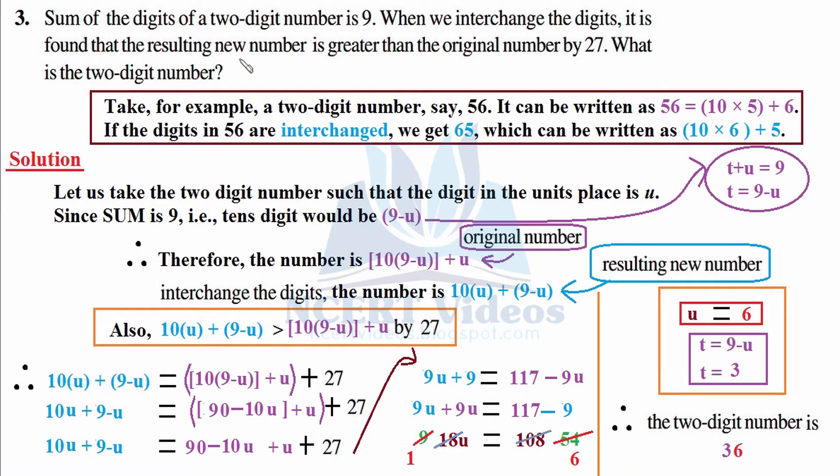It is found that the resulting new number, 10u + 9 - u, is greater than the original number by 27. This resulting number is greater than the original number by 27.